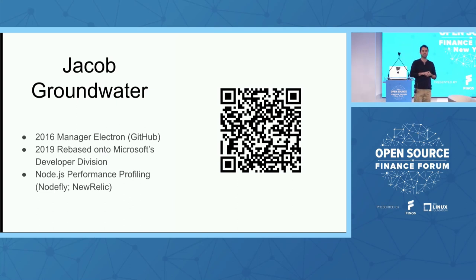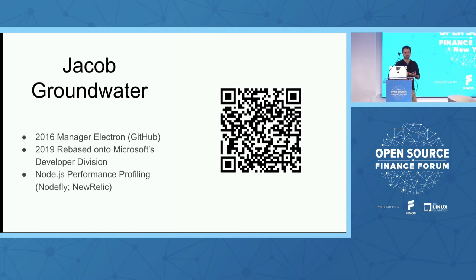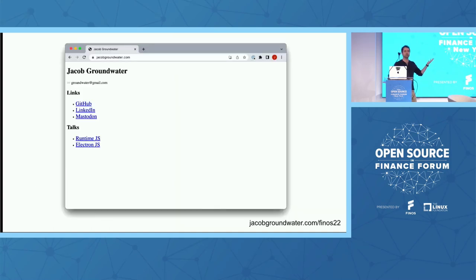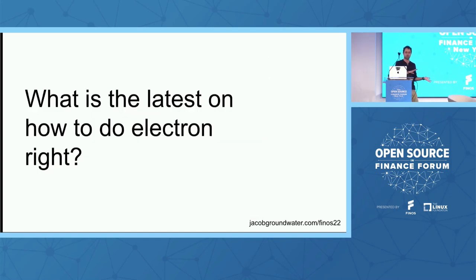My name is Jacob Groundwater. I'm the engineering lead for the Electron community under Microsoft — we were formerly at GitHub and got rebased into developer division at Microsoft. I've worked in the Node.js space a long time. I like putting JavaScript everywhere. I used to do performance tooling in Node.js, and when the opportunity came to transition to Electron, I jumped on it. Like many of you, I'm a web developer. Here's my personal web page — it gets a perfect Lighthouse score. It's a PWA you can install. Perfect performance, load time, impeccable.